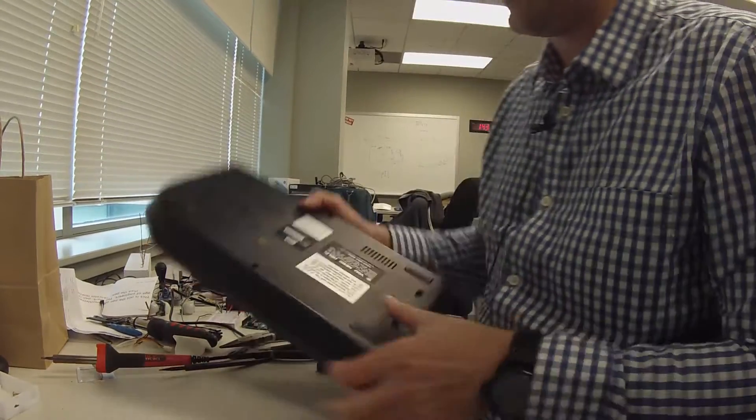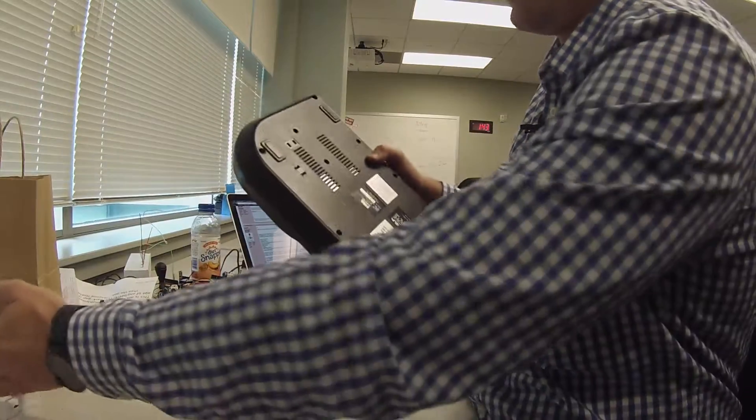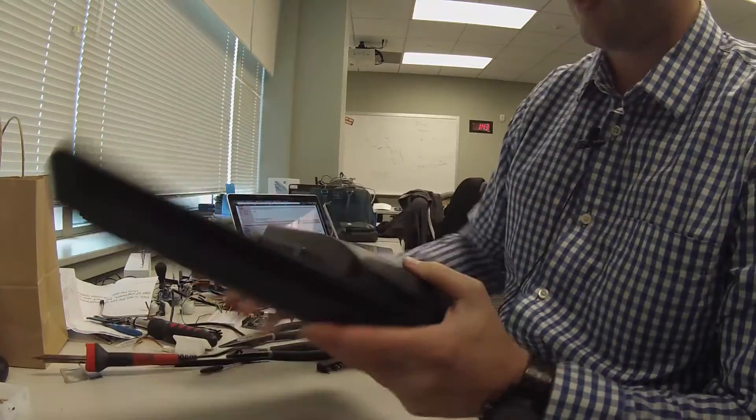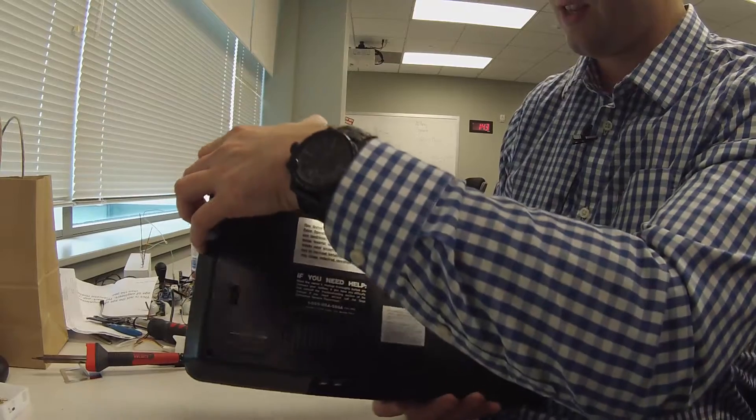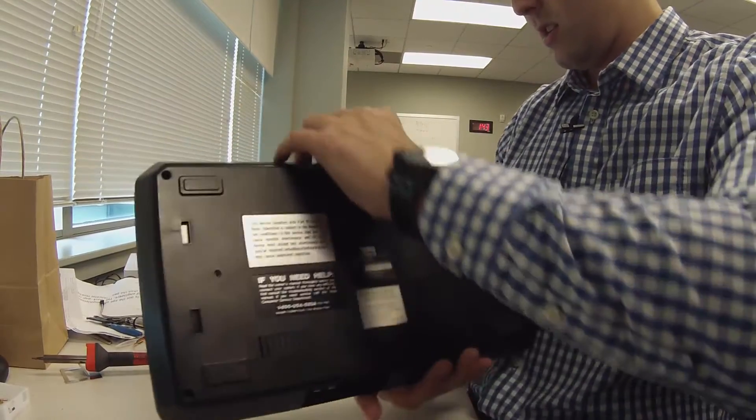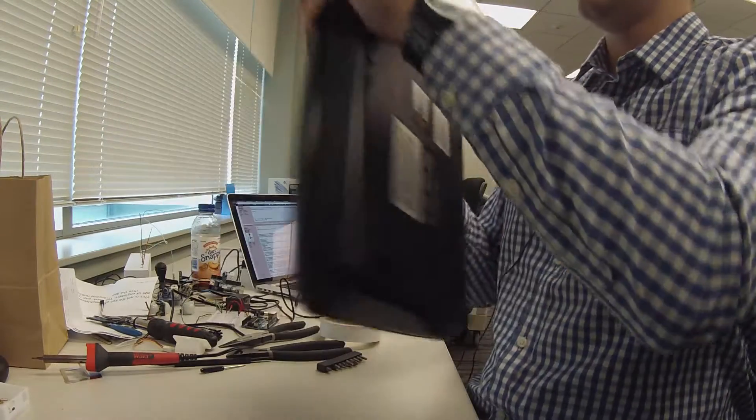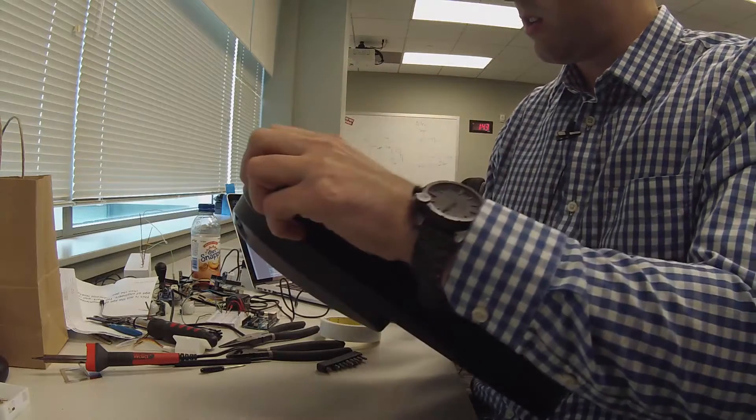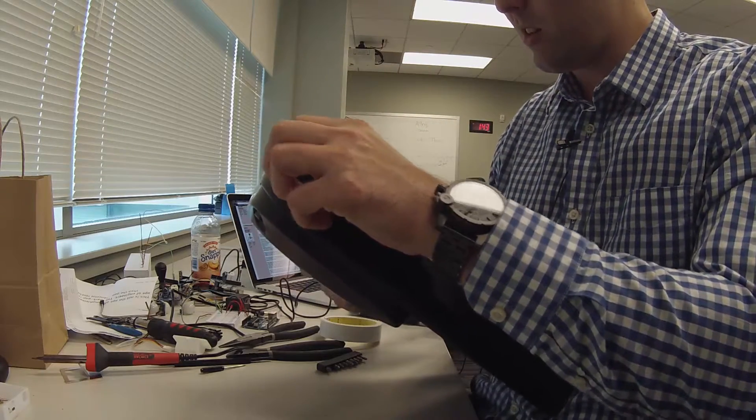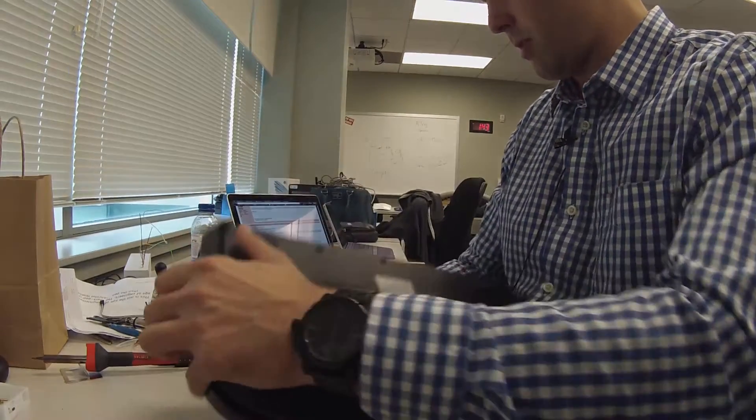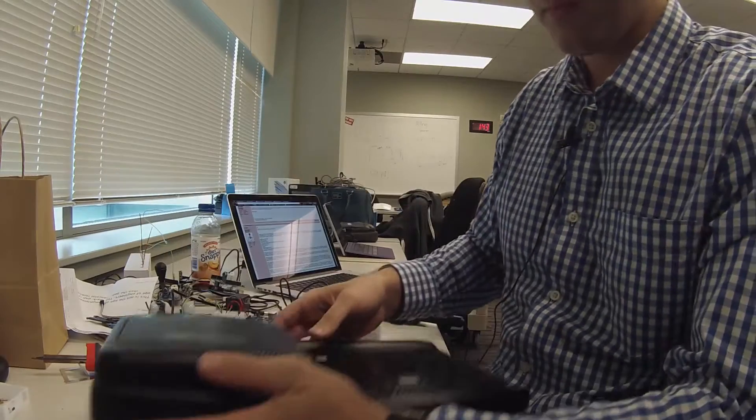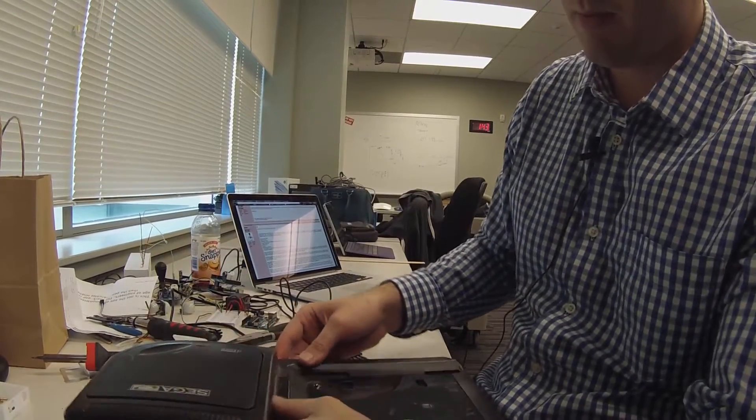So you would think that the Sega CD would be an absolute monster because of how big this whole thing is, but in reality it's really tiny on the inside. So let's see. All the clips out. Good, good, good. Looks like all of the screws are removed. Perfect. There we go. So we have the top coming off.